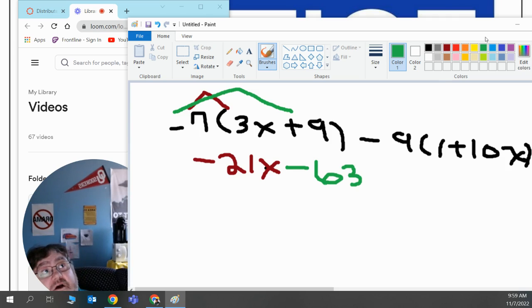Then I'll multiply the second group of numbers, negative 9 times 1. And that's again a negative times a positive. They'll give me another negative number. That will simply be negative 9.